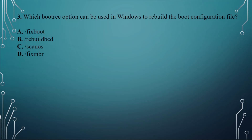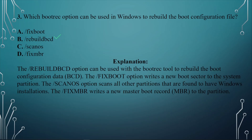Question number three: Which bootrec option can be used in Windows to rebuild the boot configuration file? A. /fixboot. B. /rebuildbcd. C. ScanOS. D. FixMBR. The answer is B, rebuildbcd. This can be used with the bootrec tool to rebuild the boot configuration data. The fixboot option writes a new boot sector to the system partition. The ScanOS option scans all partitions to find Windows installations. And FixMBR writes a new master boot record to the partition.